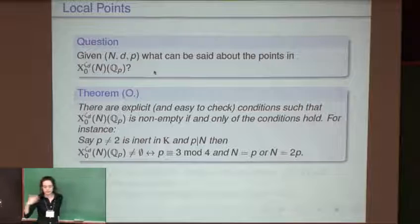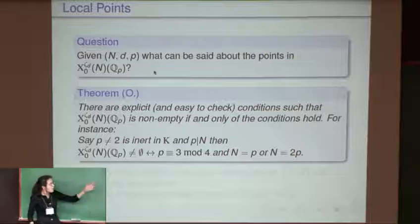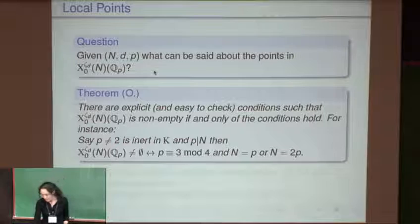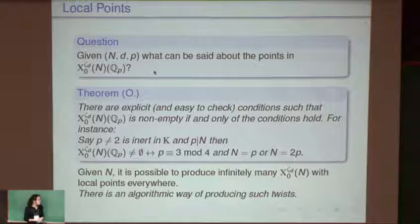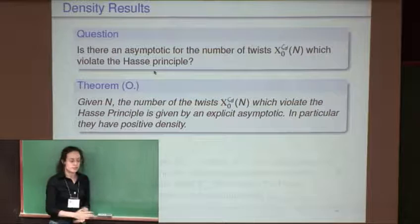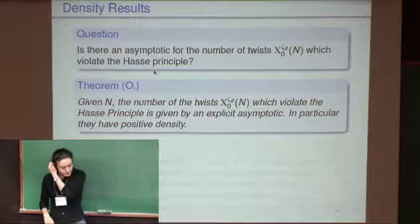We can explicitly write down the rational points on our twisted curve. These are points on the classical curve defined over Q(√d) such that when I apply Galois conjugation τ to a point P, I get −P + S. Rearranging, τ(P) + P = S — so you're asking whether the fixed point S is in the image of some trace map. The existence of a point on the twisted curve is equivalent to S being in the image of the corresponding trace map, both locally and globally.